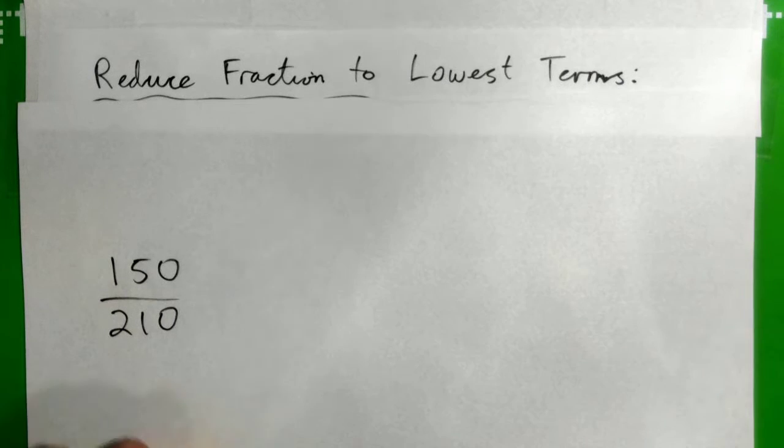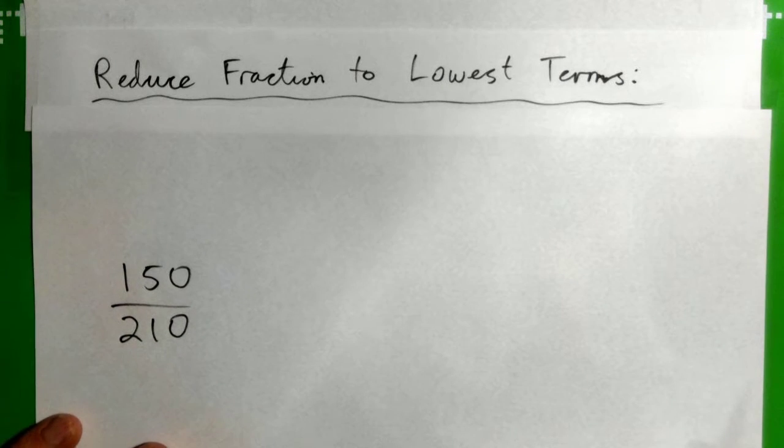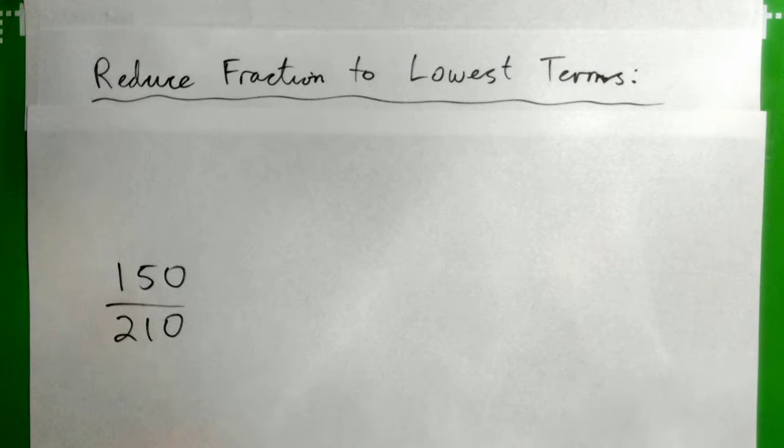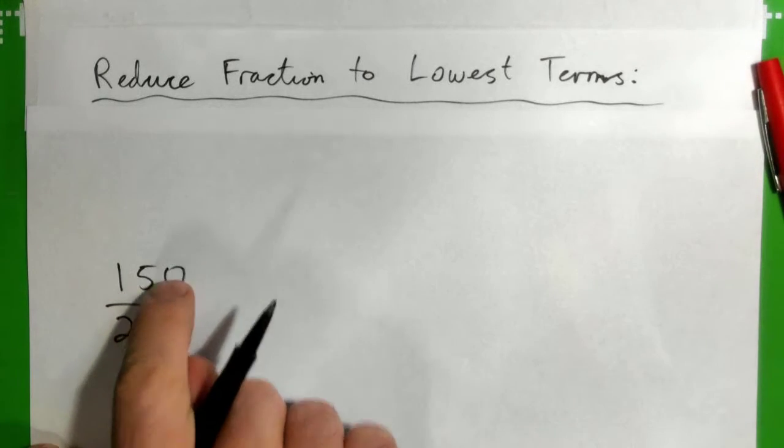All right, so here we have 150 over 210. We need to reduce that fraction to lowest terms. Knowing your times tables really helps here. Think of a number that goes into both the top and the bottom.